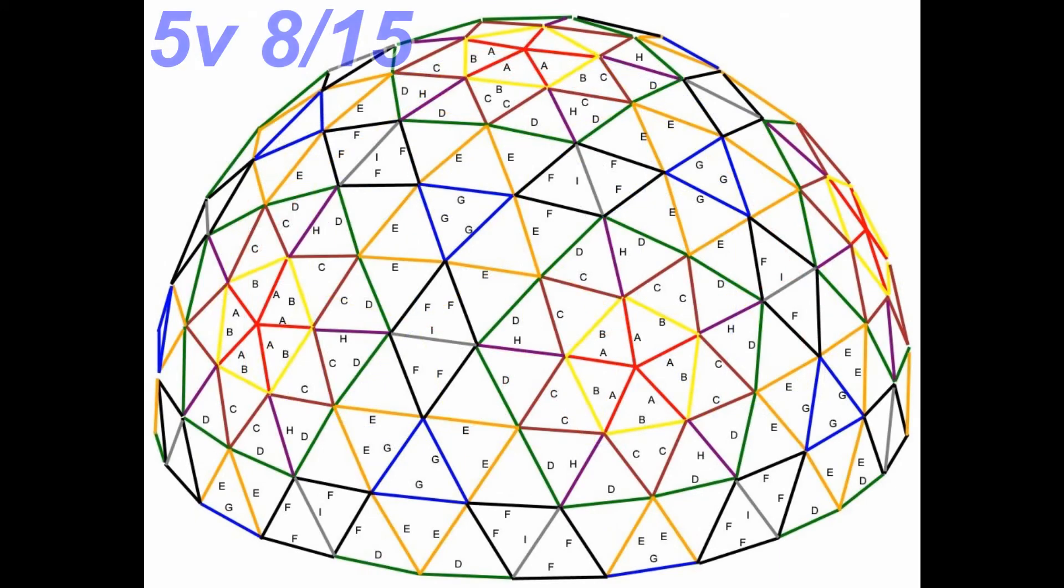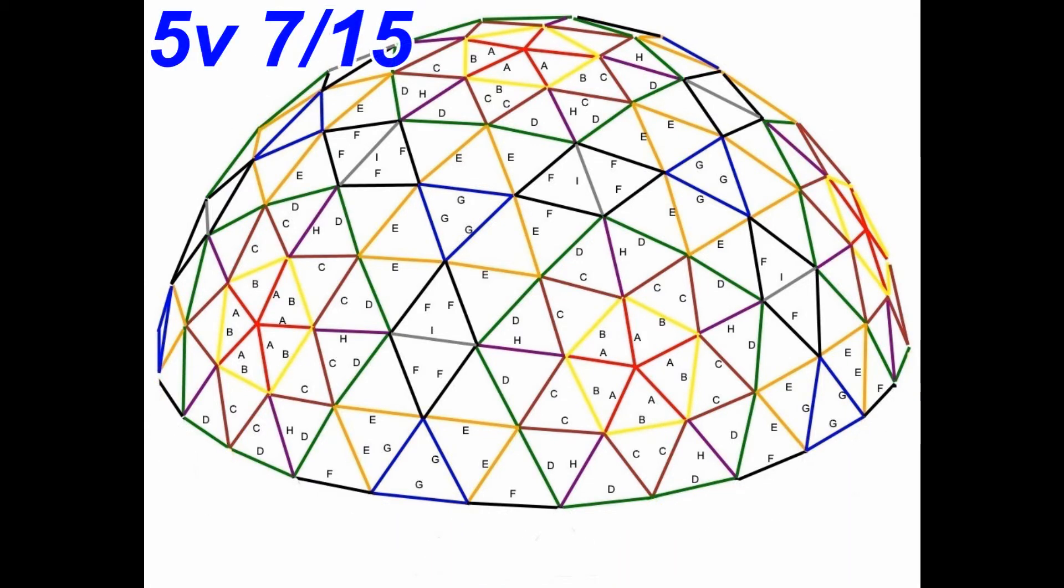The same is true for the 5 frequency dome. It also has a vertical section of struts that contains the dome equator, so it can be built as either a 7 fifteenths or an 8 fifteenths dome.